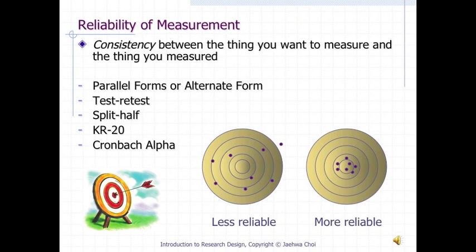Reliability of measurement means the consistency between the thing you want to measure and the thing you actually measured. There are many measures or indices available for capturing the reliability of measurement, but the details are beyond the scope of this lecture. The pictures below capture the conceptual difference between a less reliable case and a more reliable case.